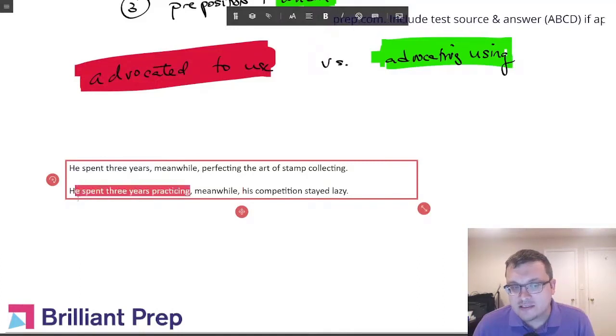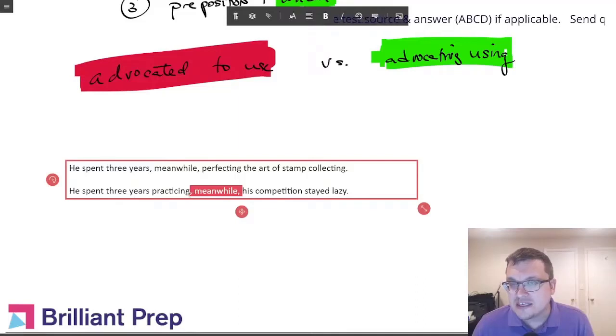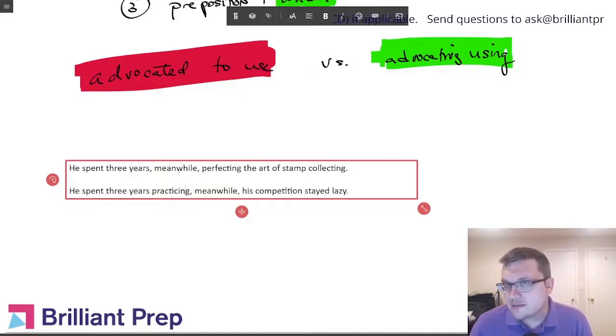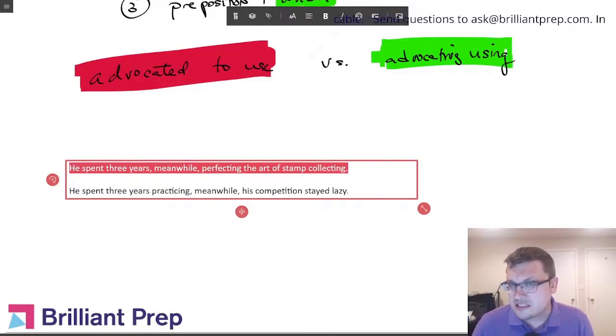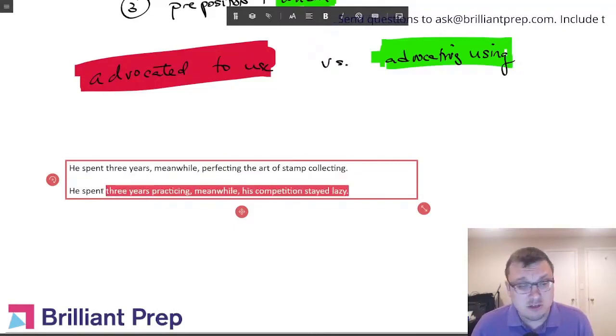And so this meanwhile is trying to connect two complete sentences. You basically have a run-on sentence here or a comma splice. So meanwhile between two commas can be right, it just depends on the sentence, it depends on the context. Here it's correct because it's inserted into the middle of a single complete sentence. Here it's wrong because it's separating two complete sentences.